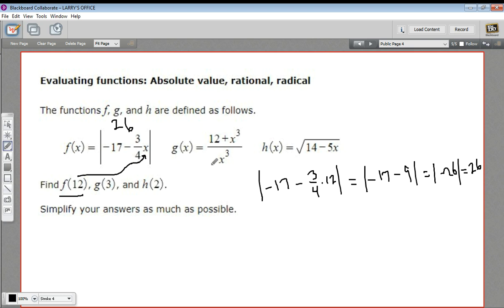Let's try this rational function next. G of 3. So let me rewrite it down here. We'll have 12 plus 3 cubed instead of x cubed. And that's over 3 cubed. So 3 cubed is 27. So 12 plus 27 over 27. So that is 39 27ths. And let's see, I think we can divide both of those by 3. So that would be 13 ninths. I think that's as simple as we get it. So this one is 13 ninths.